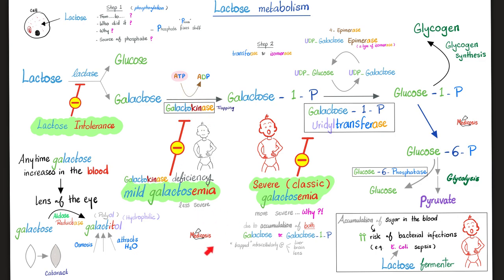Medicine makes so much sense once you understand what you're talking about. Whether I'm missing the lactase enzyme, galactokinase, or galactose-1-phosphate uridyl transferase, what's piling up in my body is sugar. Sugar is osmotically active — especially galactitol, the sugar alcohol. It's going to attract water, giving me cataracts. Since galactitol comes from galactose, you can see cataracts in galactokinase deficiency and in classic galactosemia, but rarely with lactose intolerance alone.